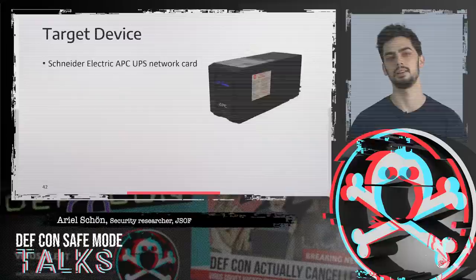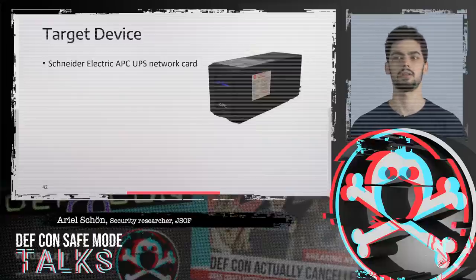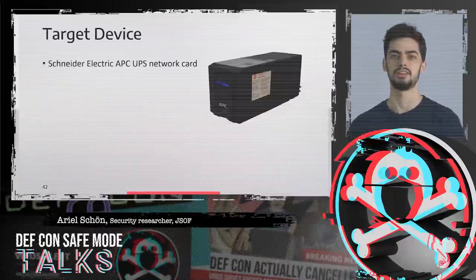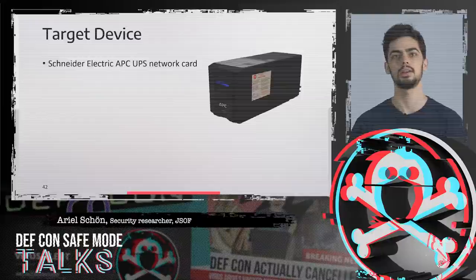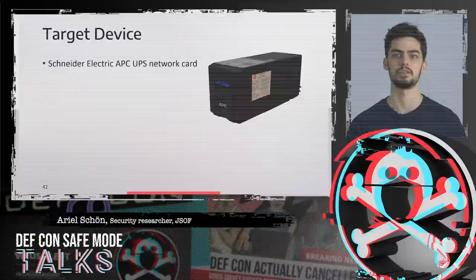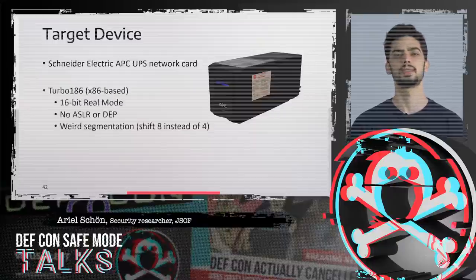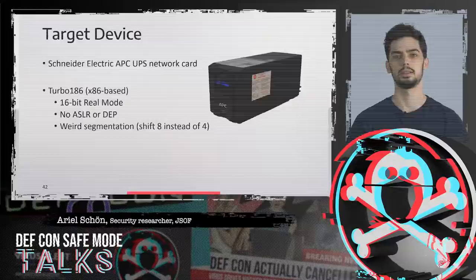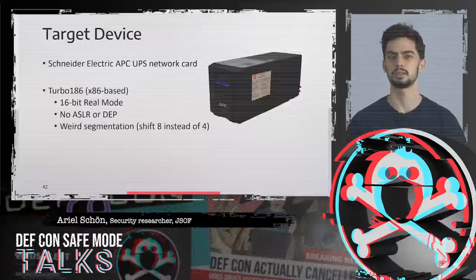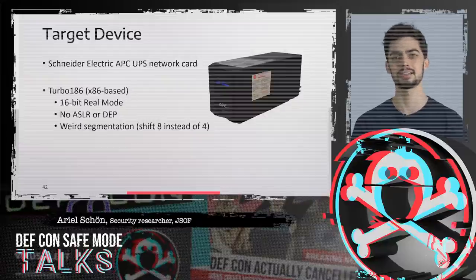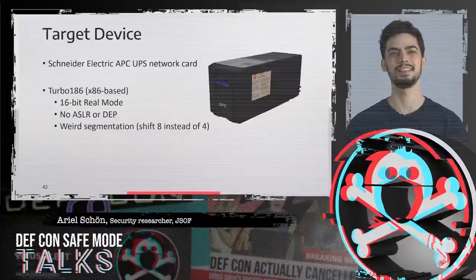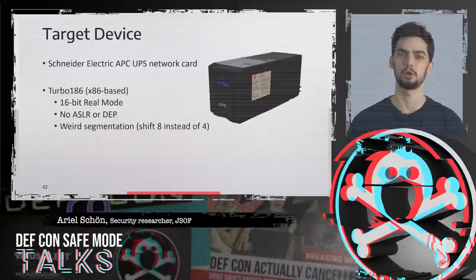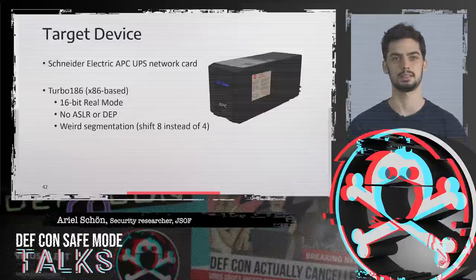A UPS device is basically a big battery — UPS stands for Uninterruptible Power Supply. You connect devices to it instead of directly to the wall outlet, to protect them from power outages or power fluctuations of any sort. We're going to exploit a UPS made by Schneider Electric, specifically on the network card. This network card houses a Turbo 186 processor — an x86-based processor. All code runs in 16-bit real mode, meaning there are no modern mitigations at all: no DEP, no ASLR. This processor has a weird segmentation scheme — instead of shifting the segment register by four bits like on x86, it shifts by eight bits, and we'll see this feature come into play later.